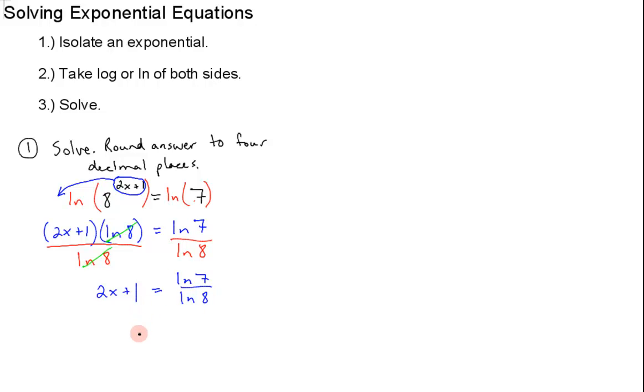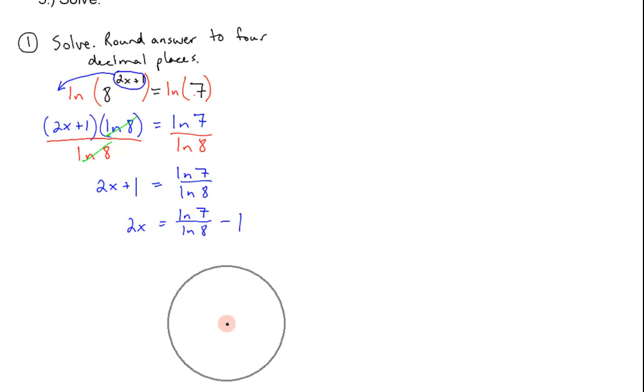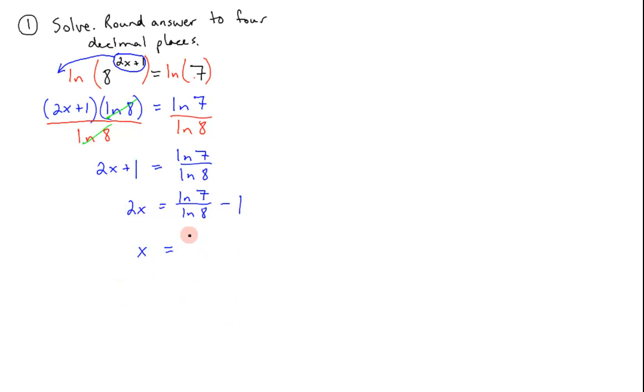Now, we subtract 1 and divide the whole thing by 2. The directions tell us to round it to four decimal places, so we will do that in the calculator. Now, we see that x is approximately negative 0.0321.